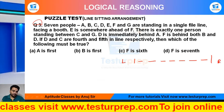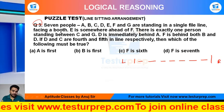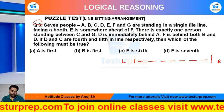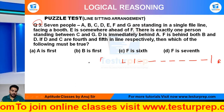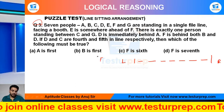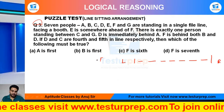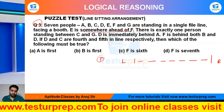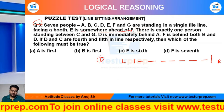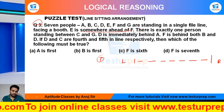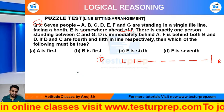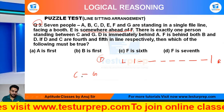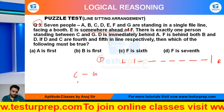In a single file facing a booth. E is somewhere ahead of F — F se kahin aagye. Ahead means aagye, jo hai mere paas E hoga. Theek hai ji, ahead of F hai. There is exactly one person standing between C and G — C and G ke bich mein bachho mere paas ek panda hoga.